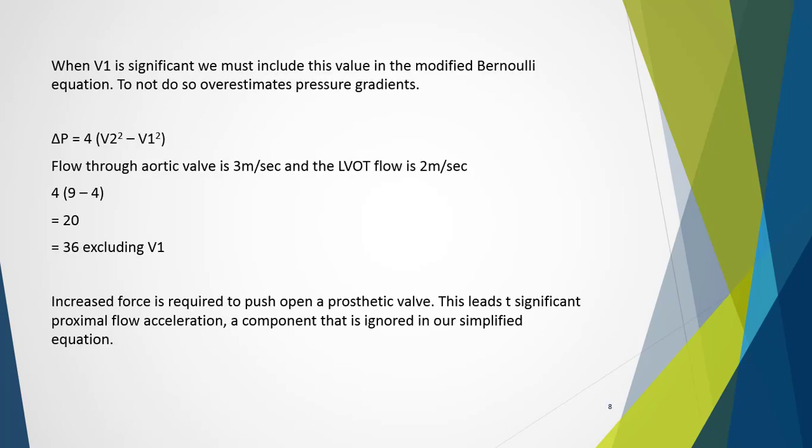Flow acceleration is represented as V1 in the modified calculation and may need to be included in some instances — such as coarctation, systolic flow obstruction in the left ventricular outflow tract, or increased cardiac output. For example, when assessing the aorta in the presence of coarctation, the velocity may easily exceed one metre per second while the coarctation itself is relatively mild. Thus, by excluding V1, the pressure gradient is significantly overestimated.